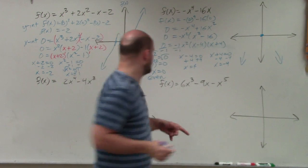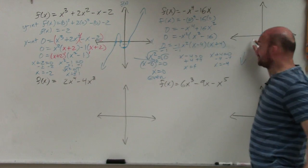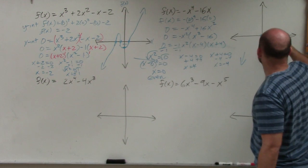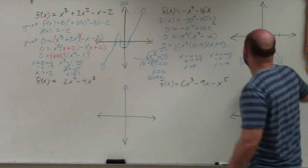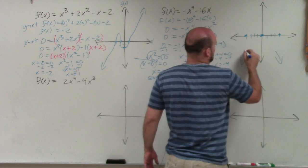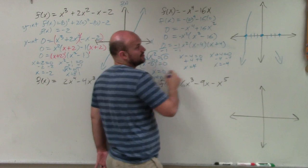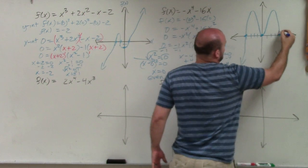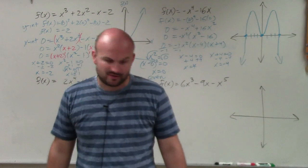Let's plot the zeros: x = 0 is the x-intercept, which is also the y-intercept; positive 4 at position 4; and negative 4 at position −4. The graph has to cross at negative 4 and positive 4. But at x = 0 the multiplicity is even, so it's going to touch, rebound, and go back up. So the graph kind of looks like a nice little 'm' shape.